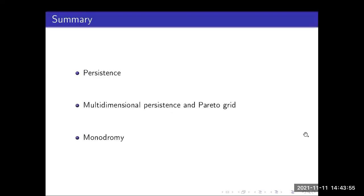First, I'm going to briefly recall how persistence works in the case of continuous filtering functions. Then I'm going to explain what our approach to multidimensional — at least two-dimensional — persistence is, as well as the Pareto grid. And finally, I'm going to discuss this interesting phenomenon of monodromy in multidimensional persistence.